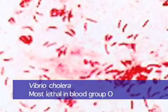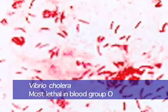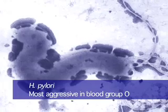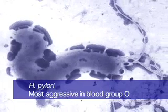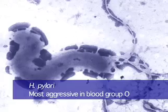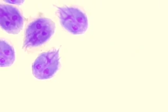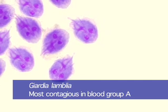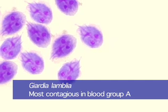Microorganisms, including many strains of bacteria and viruses, are often more lethal for one particular ABO blood group over another. This is the result of the microorganism mimicking the human host's blood group antigen and evading detection. For example, bacteria with a surface antigen similar to blood group A substance would be viewed as less foreign by a blood group A immune system.